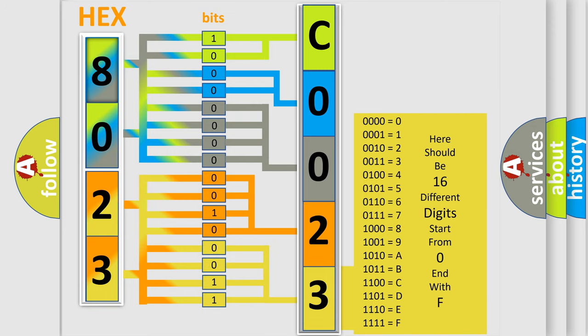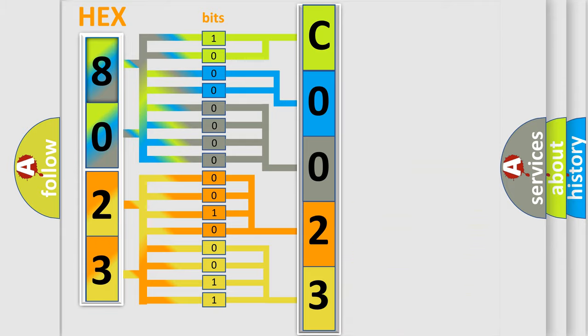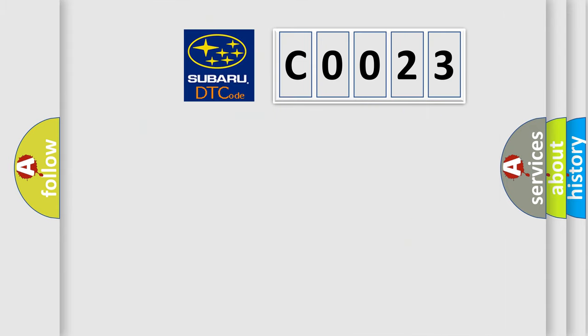We now know in what way the diagnostic tool translates the received information into a more comprehensible format. The number itself does not make sense to us if we cannot assign information about what it actually expresses. So, what does the diagnostic trouble code C0023 interpret specifically for Subaru car manufacturers?